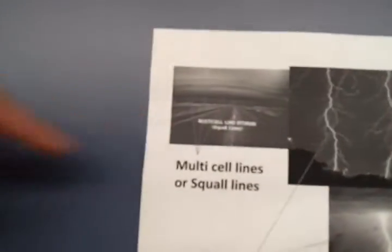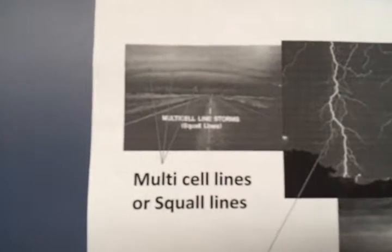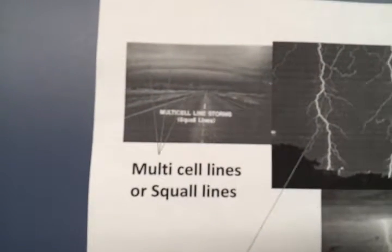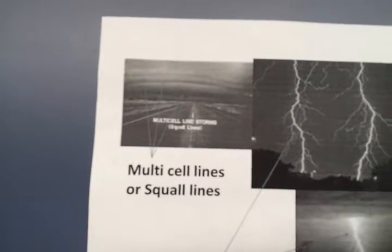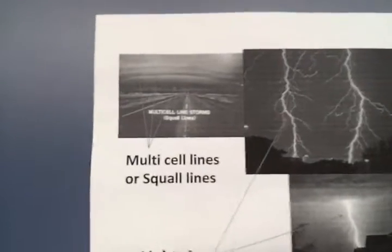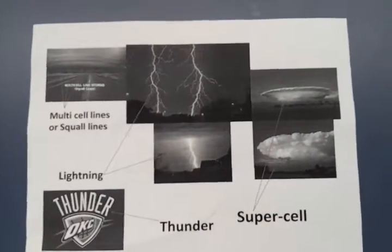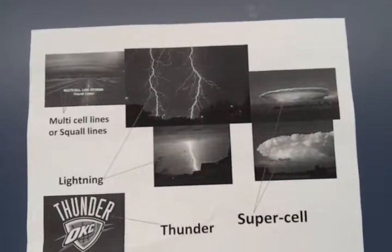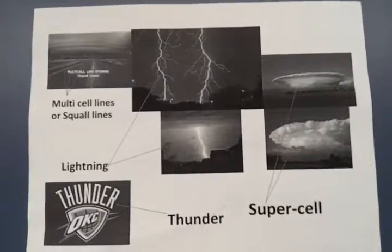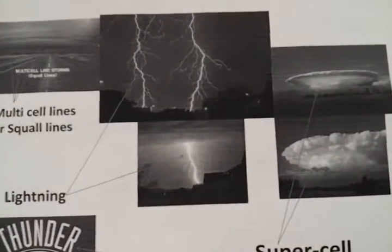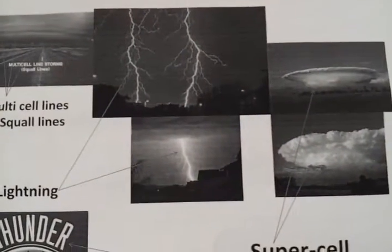A squall line, or multi-cell line, is an elongated line of severe thunderstorms that can form along and or ahead of a cold front. Multi-cell clusters are the most common type of thunderstorm. Single cell — this term technically applies to single thunderstorms with one main updraft. Single cell thunderstorms normally last 20 to 30 minutes.